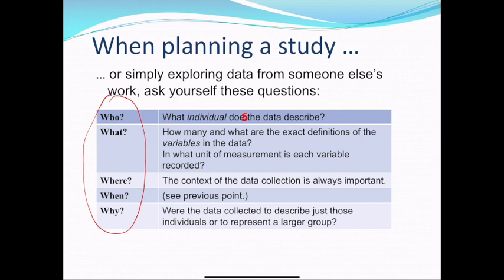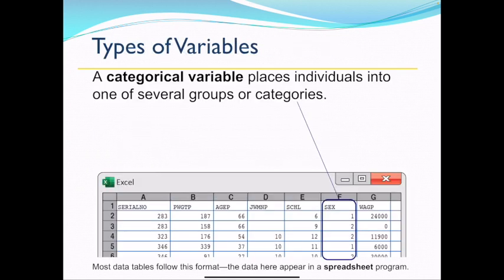And when we collect data, they can be broken up into two different types of variables. So those variables are categorical. It's what places individuals into one of several groups or categories. Now that could be gender, hair color. It could be even like zip code. I know you're like, oh no, Dr. Miller, zip code's a number. Well, it puts you into a category. It puts you into a region in the United States. And much like a state or a county is categorical, so is zip code. We wouldn't want to calculate the average zip code. We'll talk about averages in chapter two.